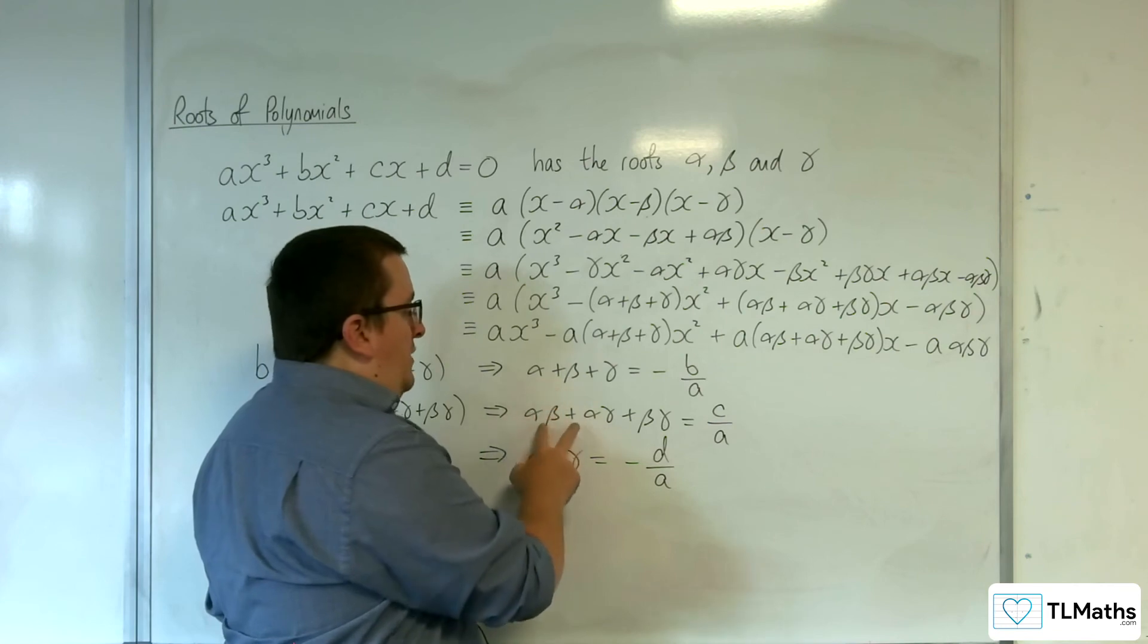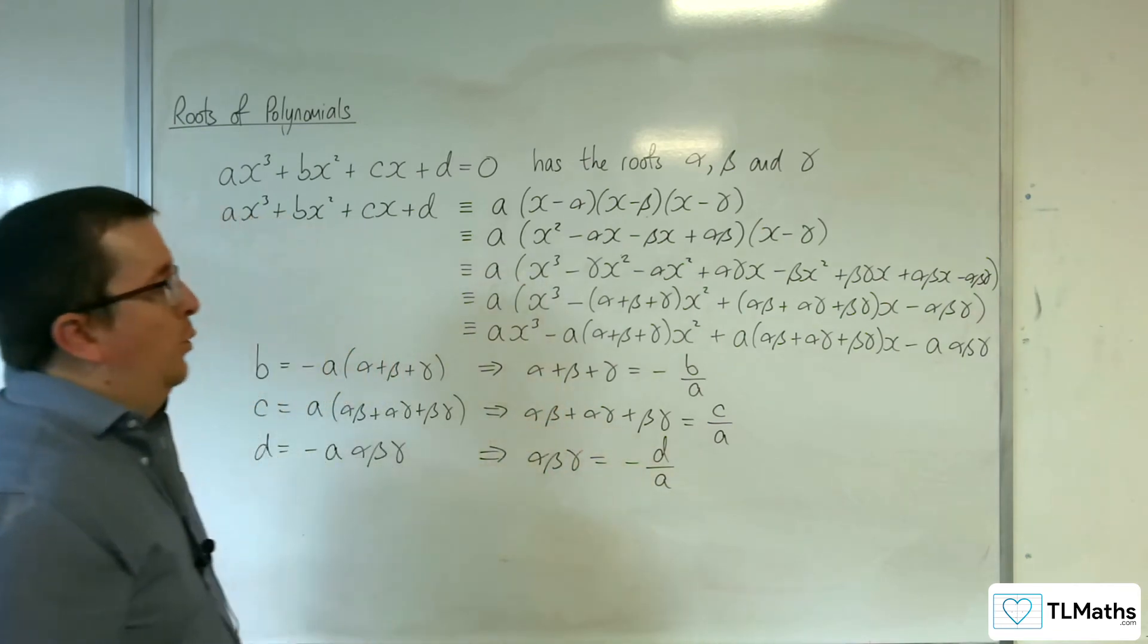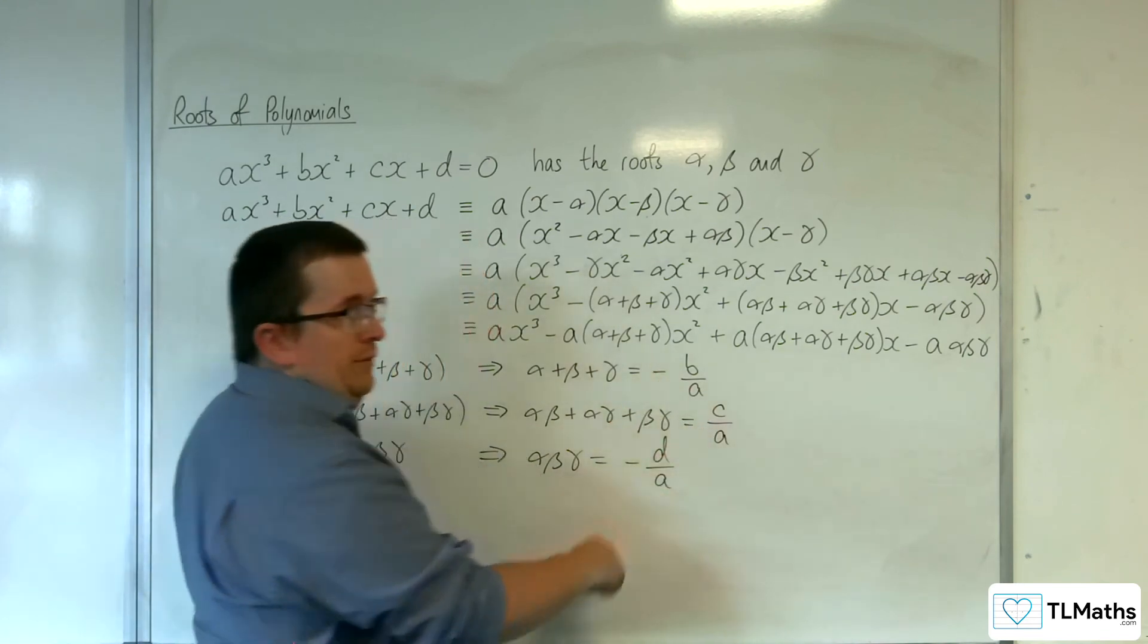Ones, then twos, then threes. You'll also notice that they go negative, positive, negative.